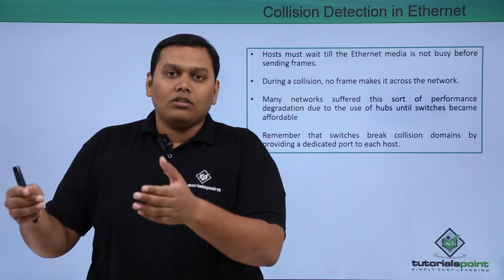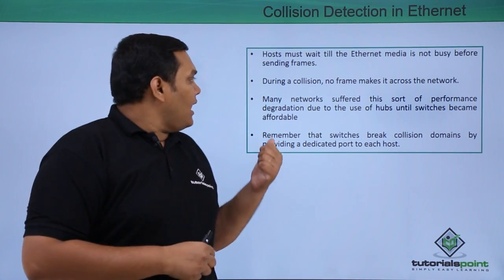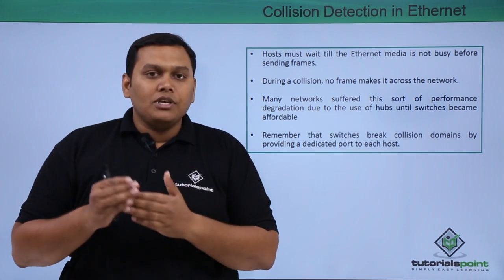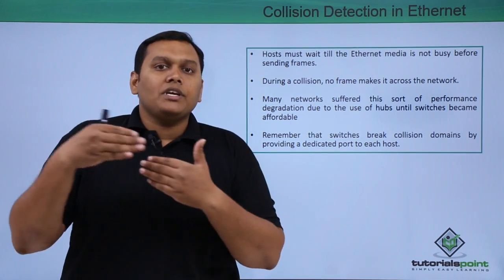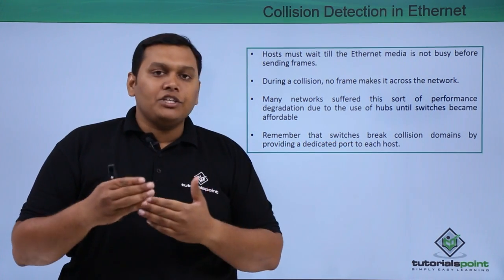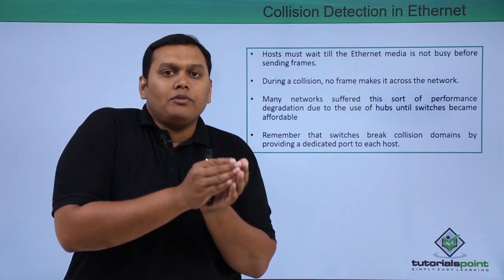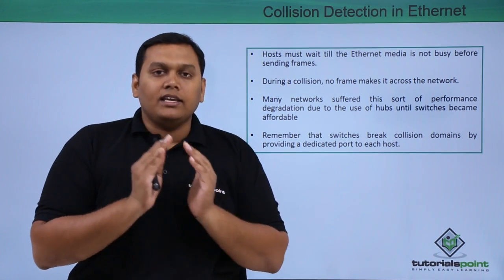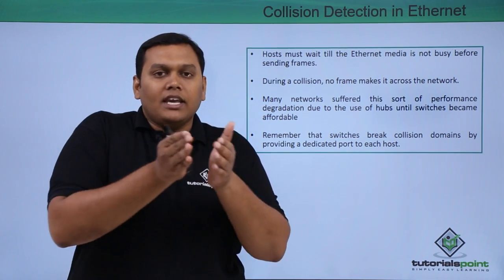Due to jamming signals and collisions, no frames are passed through the network, and many networks suffer these performance issues — also because the hub is the only device that works in this setup. Due to these issues, switches were introduced into the network. Switches break the collision domain by dedicating a port to each host, switching from one port to another to send data packets. This is collision detection in Ethernet, and due to these performance issues, switches replaced hubs.